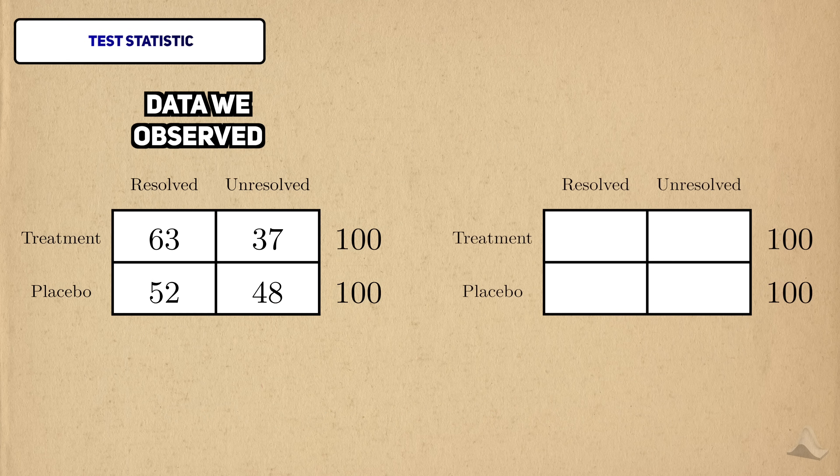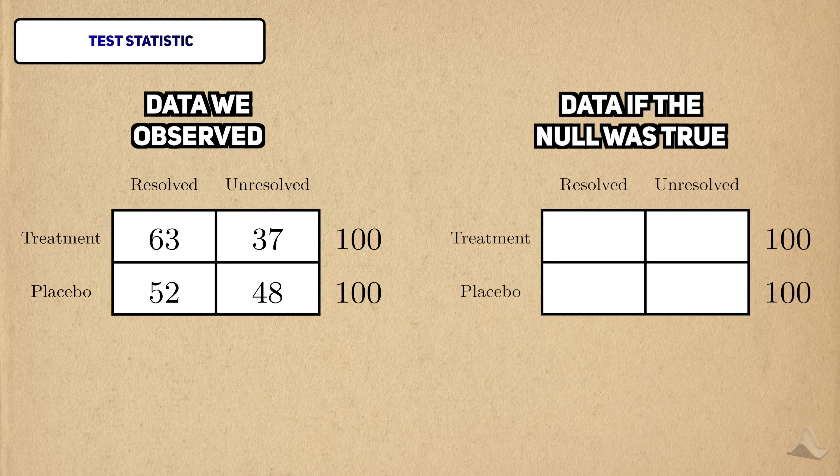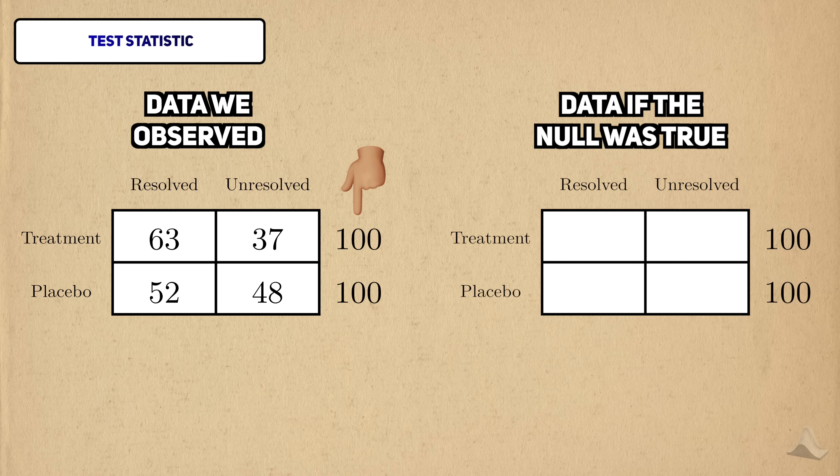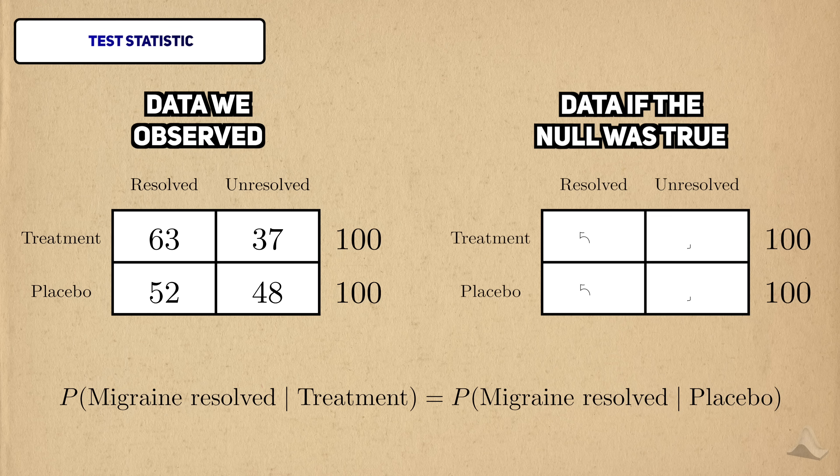To do this, we need to create a second contingency table. And this table will represent what we expect to see if the null hypothesis is true. In our data, there were 100 people in both groups. Under the null hypothesis, both groups will have the same response rate, so by extension, we would expect the counts in each rows to look the same.